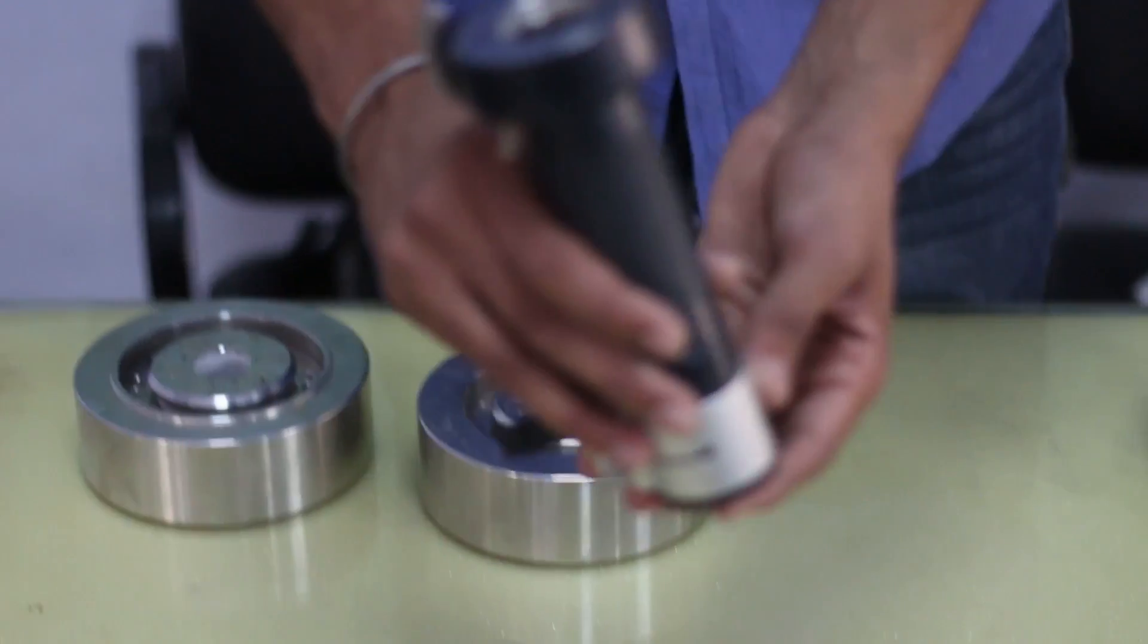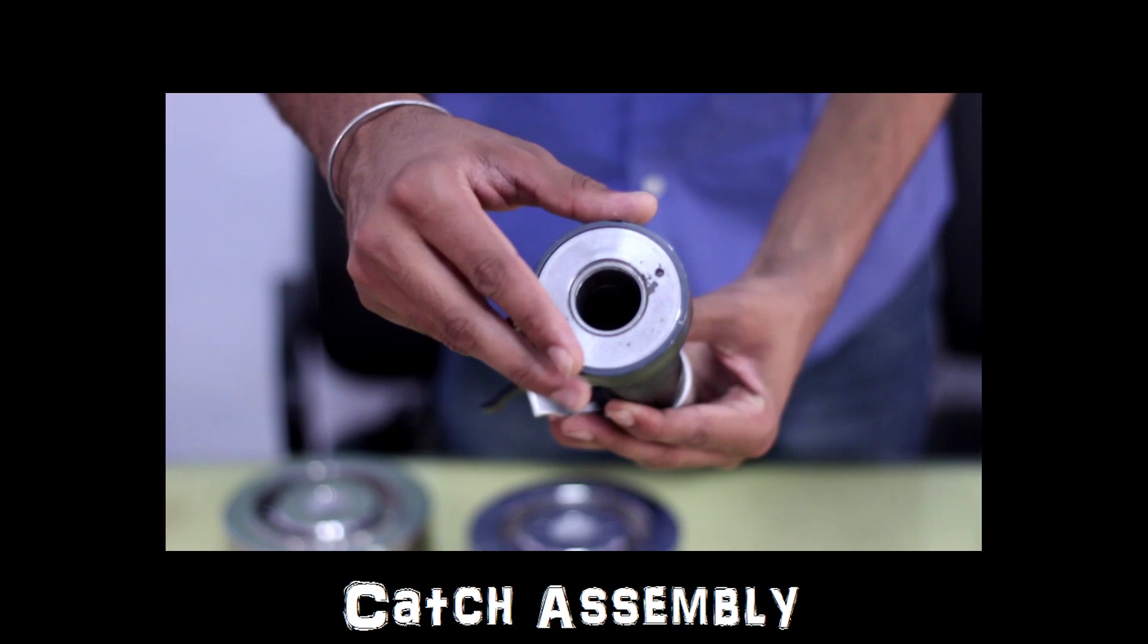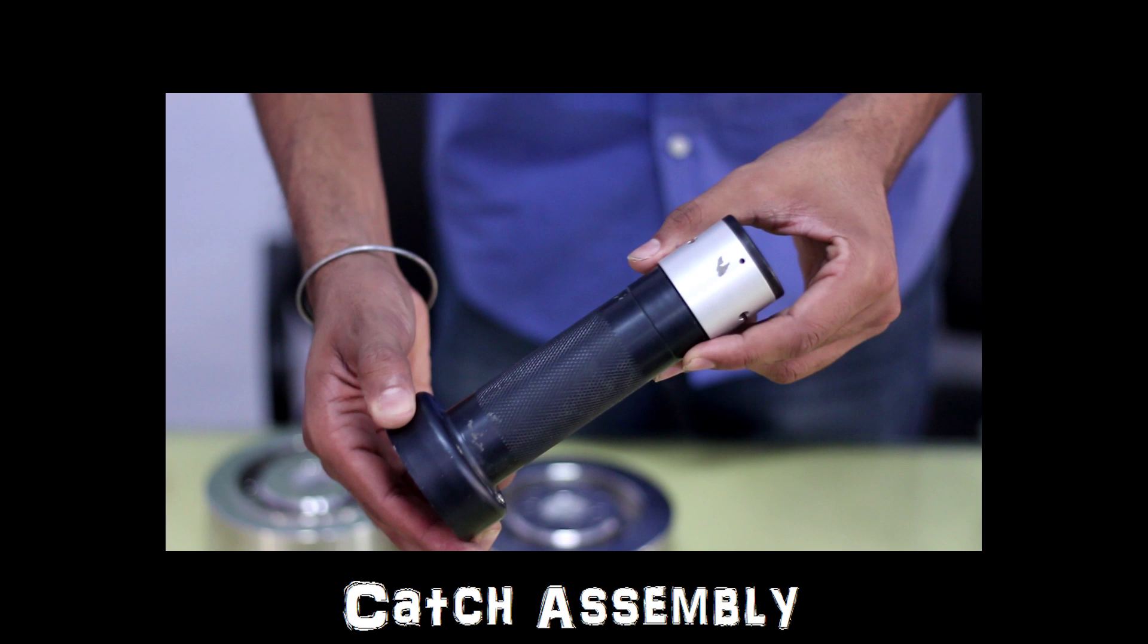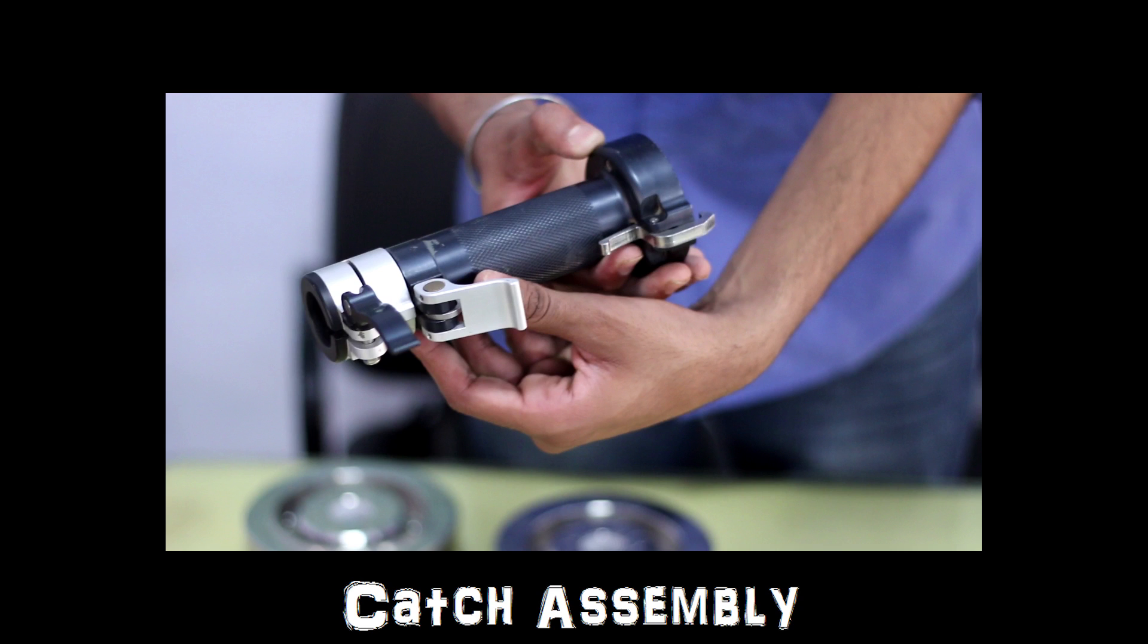This is the weight catch assembly which also has a safety latch. This is attached to the top of the rod and the weight is dropped from it. This also has a lock pin which has two positions, locked and unlocked, to release the falling weight for the experiment.